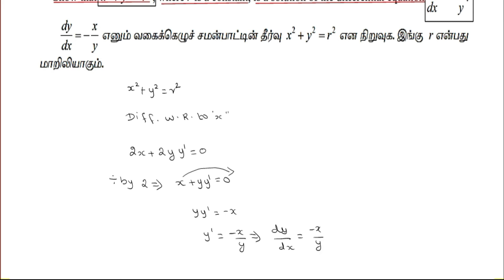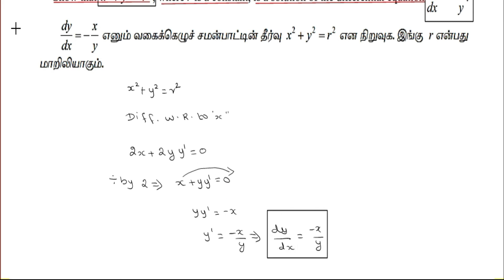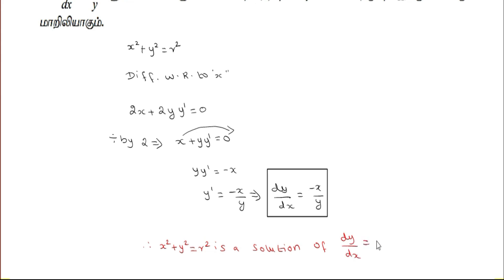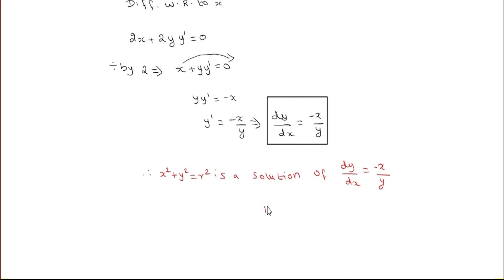Therefore, x squared plus y squared equal to r squared is a solution of dy by dx equal to minus x by y. Hence proved.